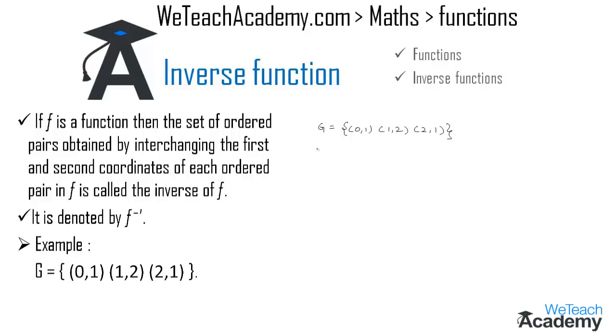Now let us find G inverse. We already know that G inverse can be found just by interchanging x and y coordinates. So we get the ordered pairs in the set G inverse as (1,0), (2,1), and (1,2).